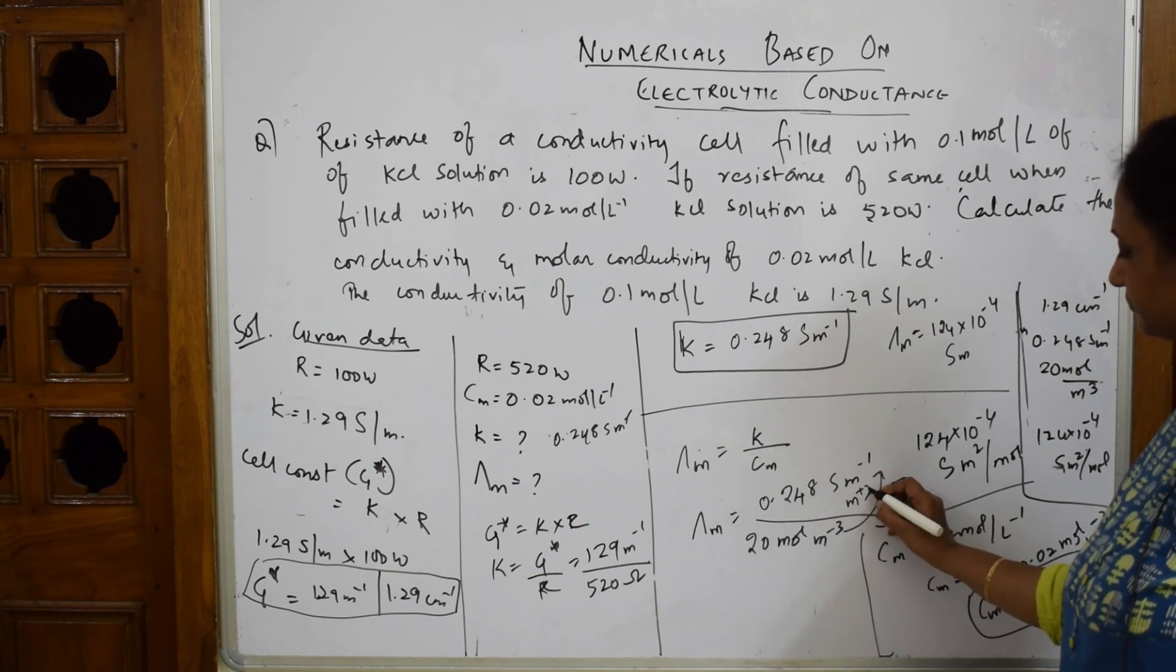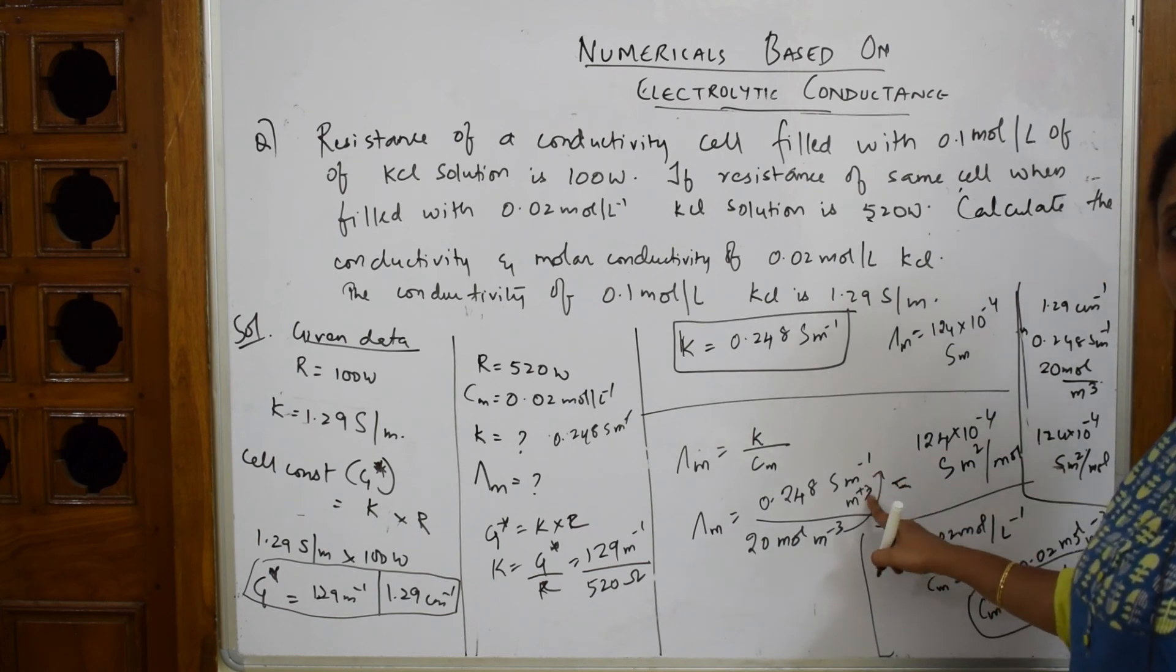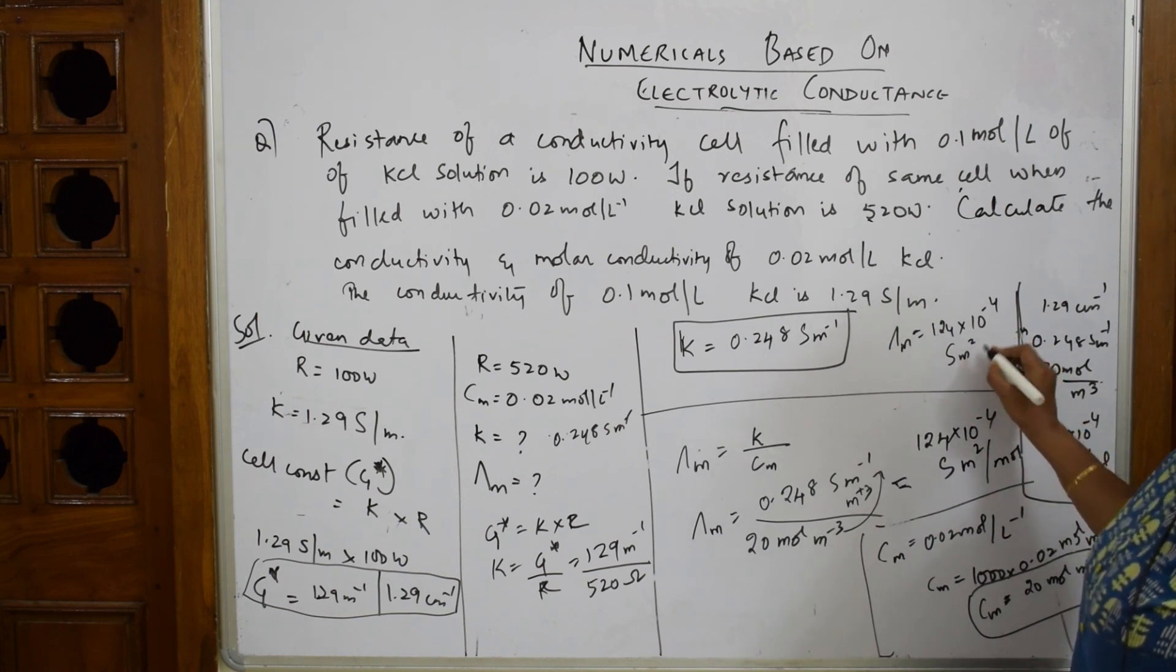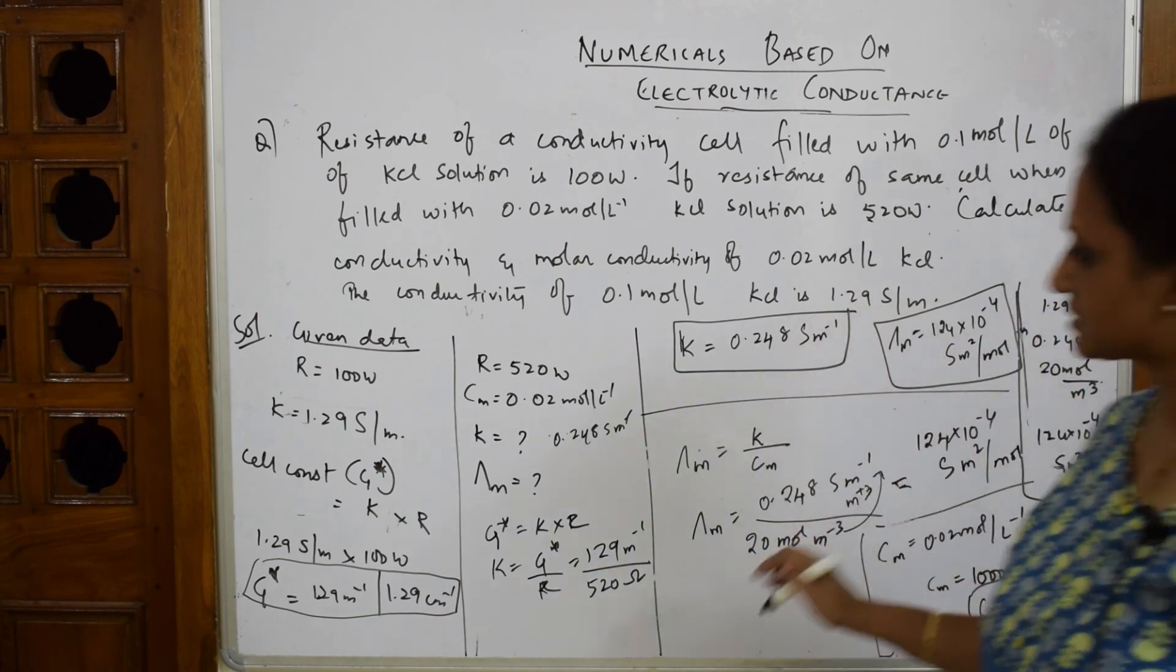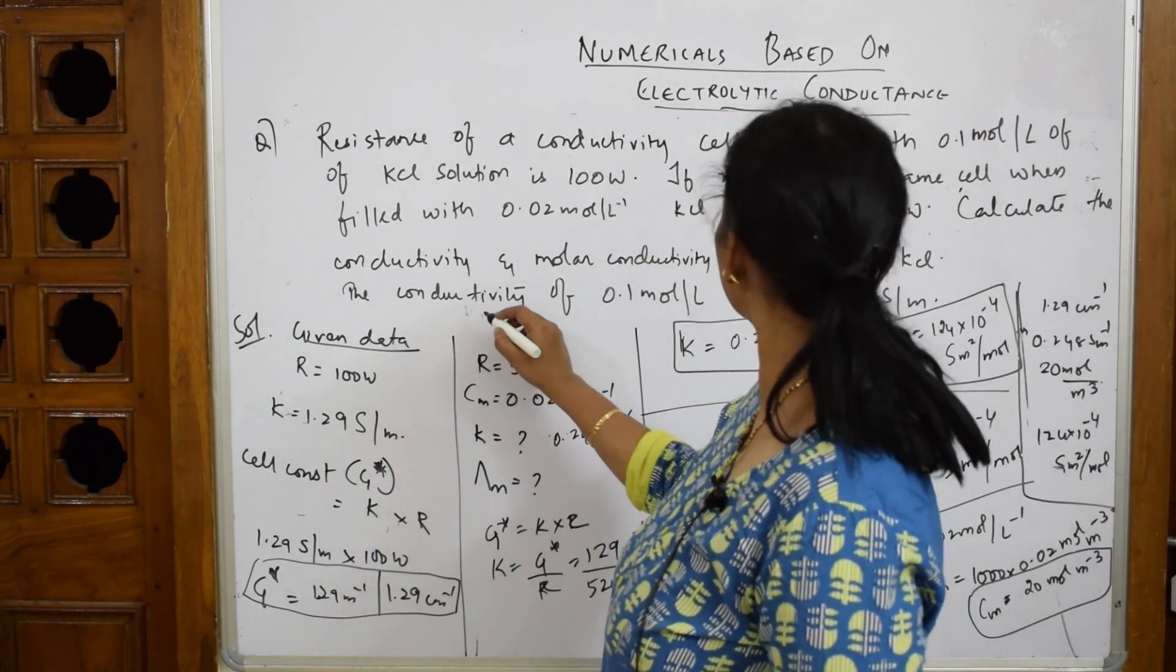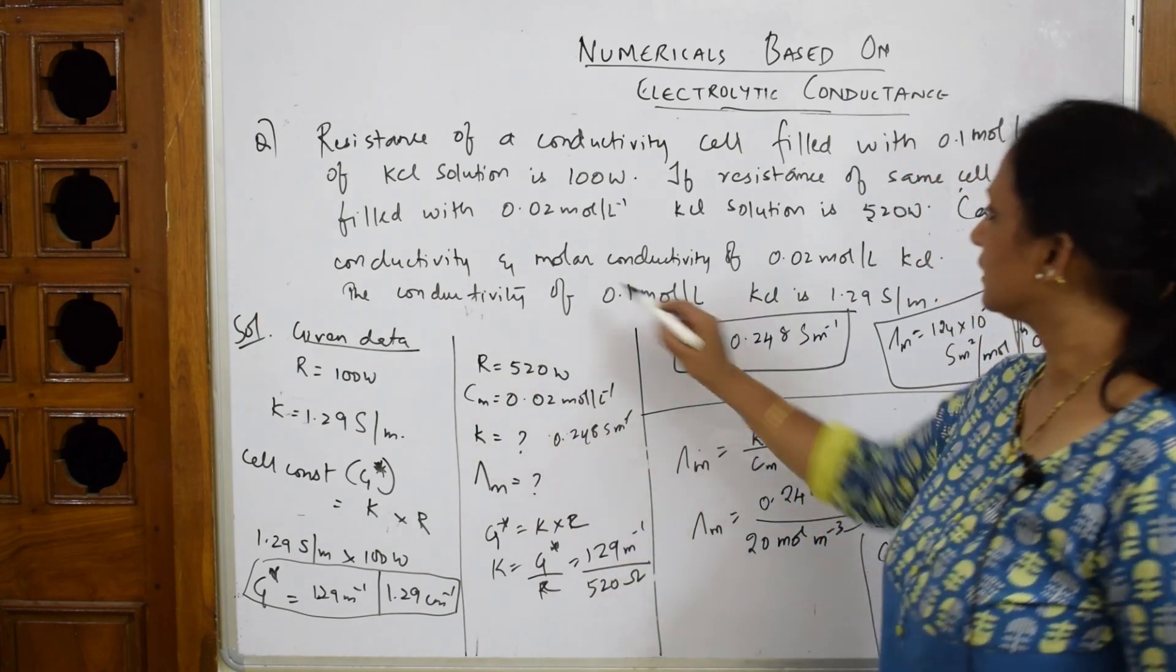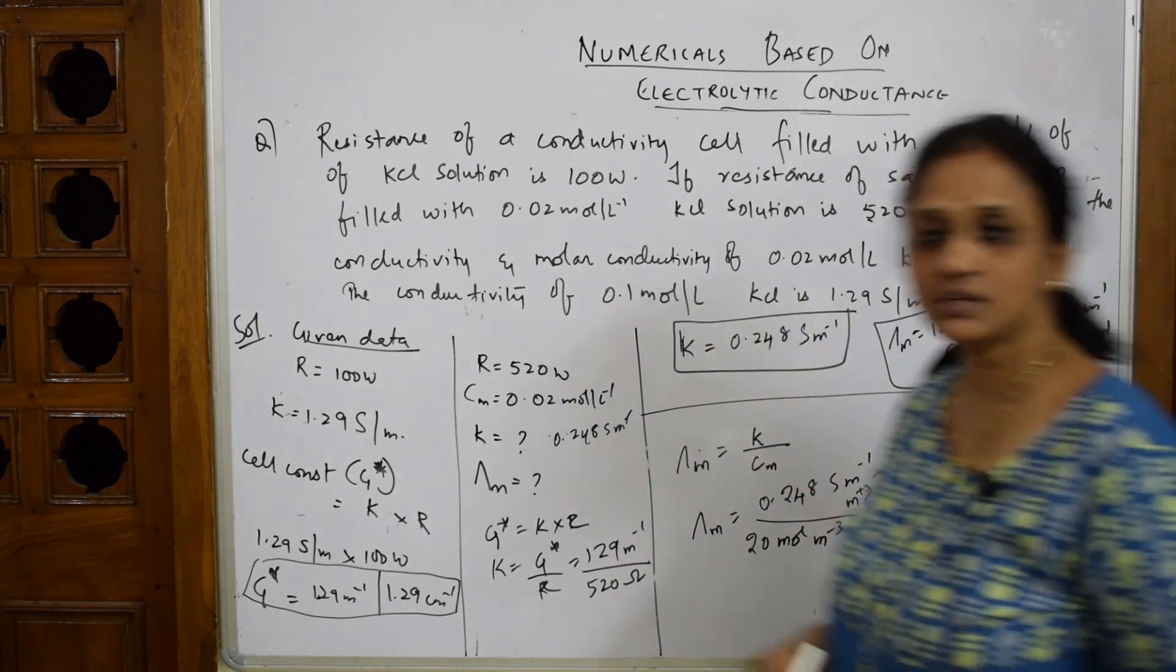So I've got three answers: first, the cell constant; second, the conductivity of the 0.02 molar cell; and third, the molar conductivity.